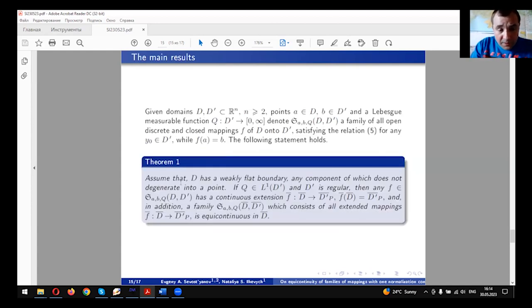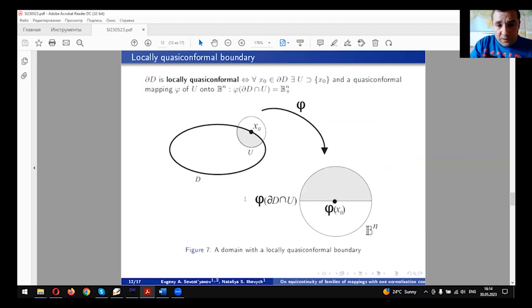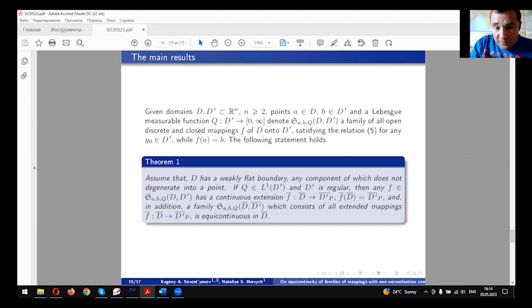The following theorem holds: assume that D has a weakly flat boundary and any component of this boundary degenerates into a point. If the function Q in inequality (5) is integrable in D' and D' is regular, then any mapping f of the class mentioned above has a continuous extension to the boundary, and the corresponding class is equicontinuous in the closure of D. The closure of D we have in the Euclidean sense, and the closure we understand with respect to the prime end boundary here in this result.